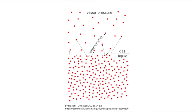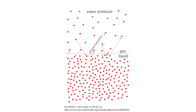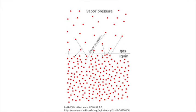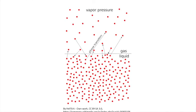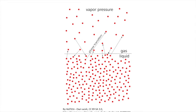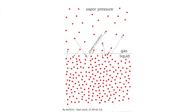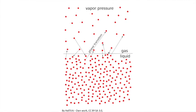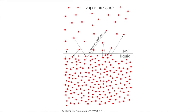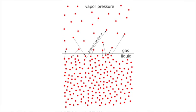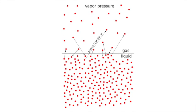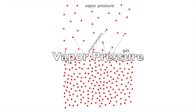When the molecules are in the gas phase, they exert a certain amount of pressure on the container — we call the pressure due to a particular gas in the container the partial pressure. When we reach equilibrium, with equal numbers of molecules breaking free and coming back, we call this partial pressure the vapor pressure.